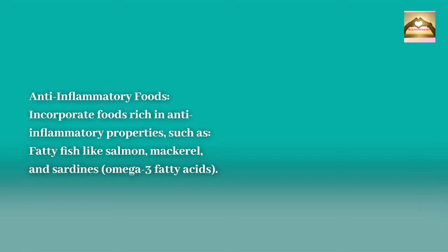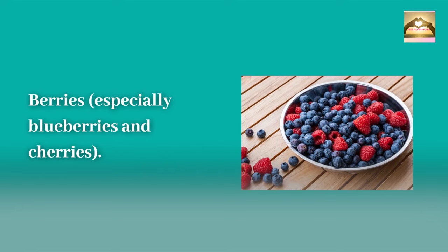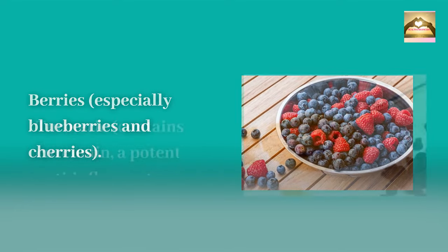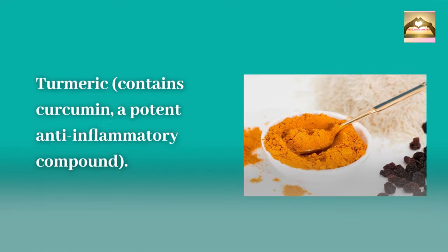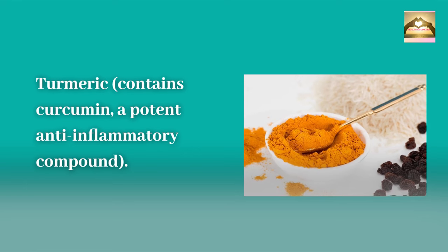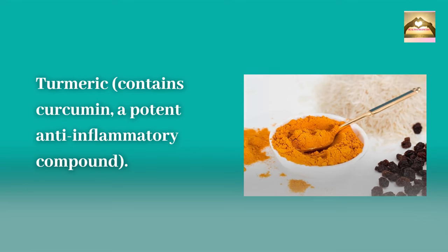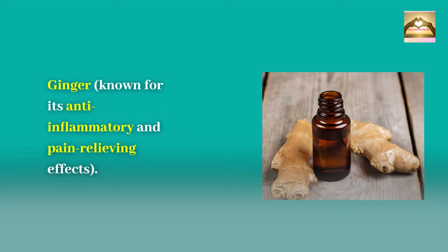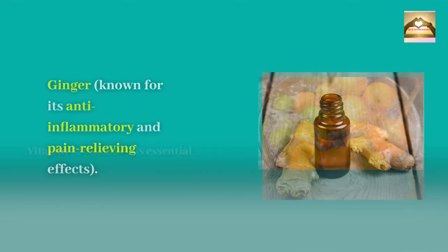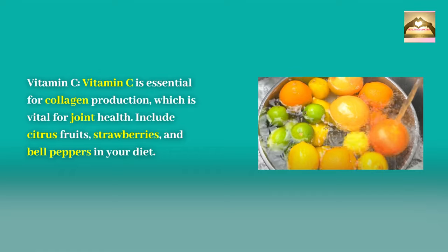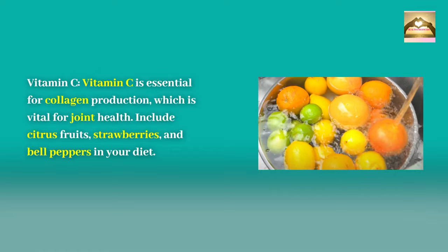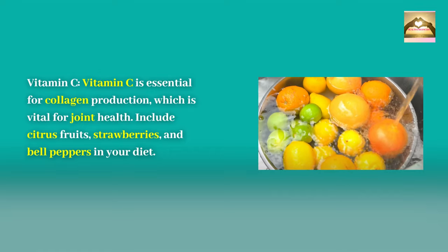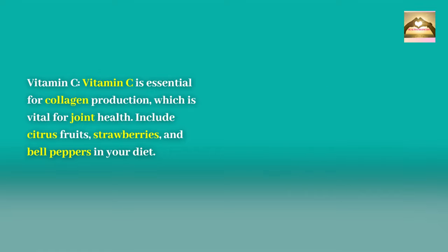Omega-3 fatty acids. Berries, especially blueberries and cherries. Turmeric contains curcumin, a potent anti-inflammatory compound. Ginger is known for its anti-inflammatory and pain-relieving effects. Vitamin C is essential for collagen production, which is vital for joint health. Include citrus fruits, strawberries, and bell peppers in your diet.